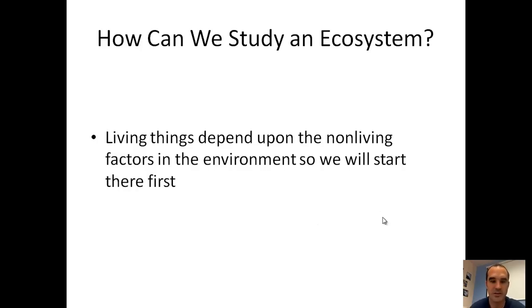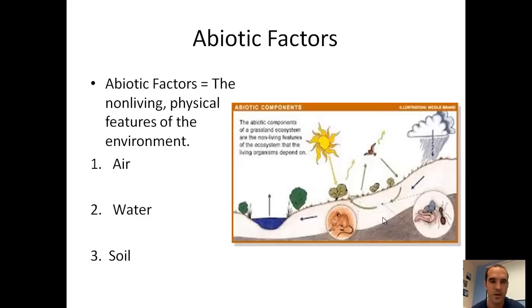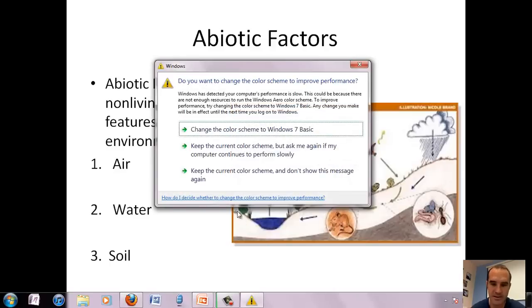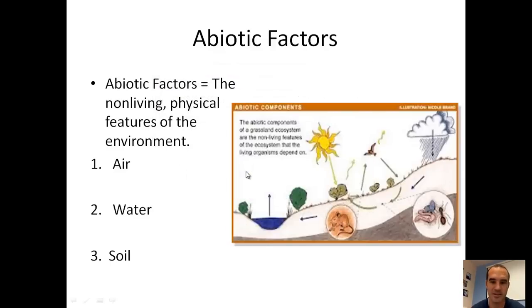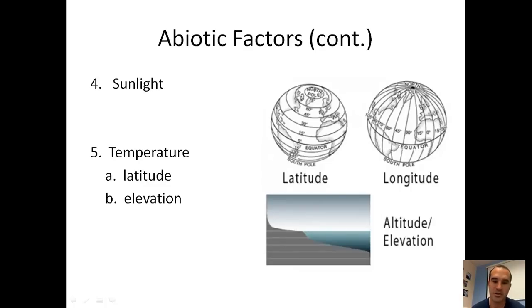So how can you study an ecosystem? There's interaction both between the living and non-living things in the environment, so we're going to start with the non-living things first and look at how they shape a given area. Another word for non-living things, the word that we're going to use, is abiotic factors. Abiotic factors are the non-living physical features of the environment. I've got a nice little picture there that shows some of them—you've got the sunlight coming in, the rain coming down, you have water evaporating out of that little pond. I've listed them: first one is air, then you have water, third is soil, sunlight, and temperature.